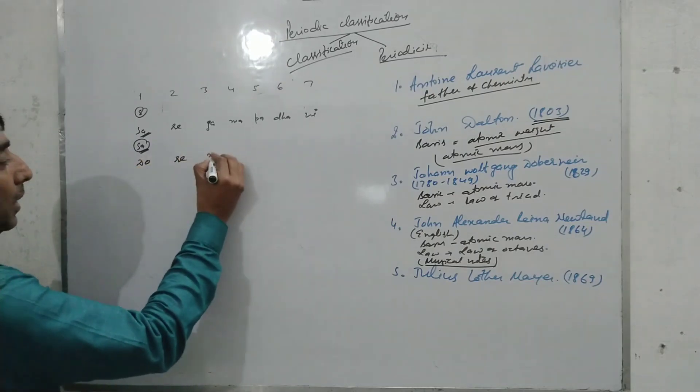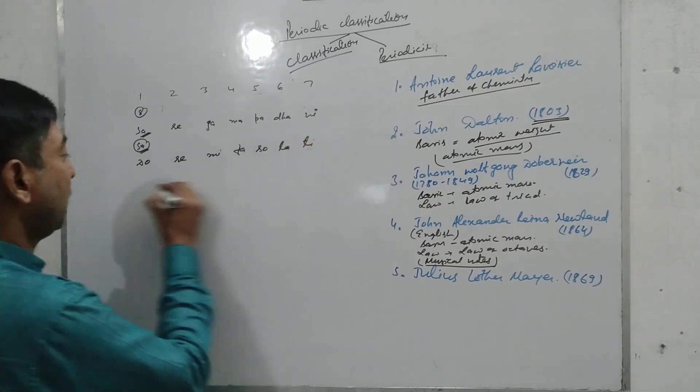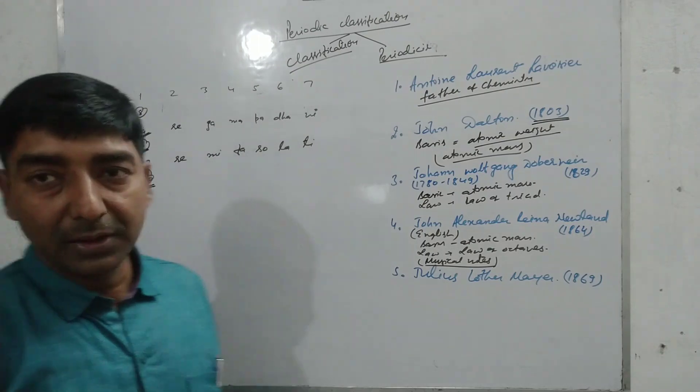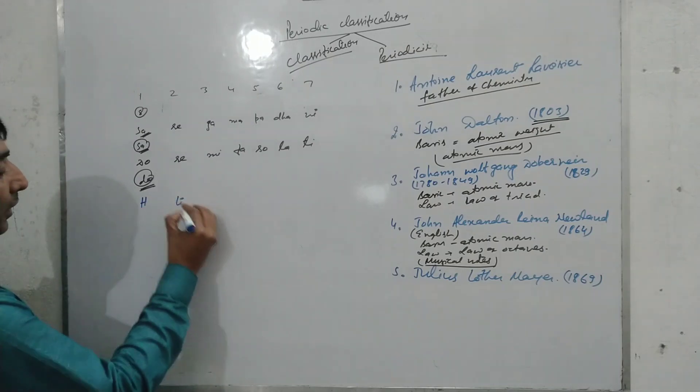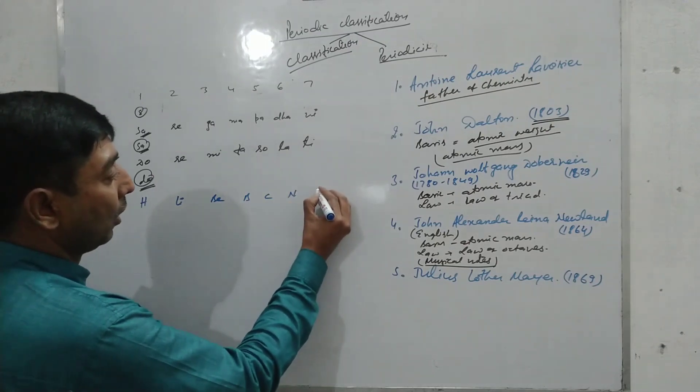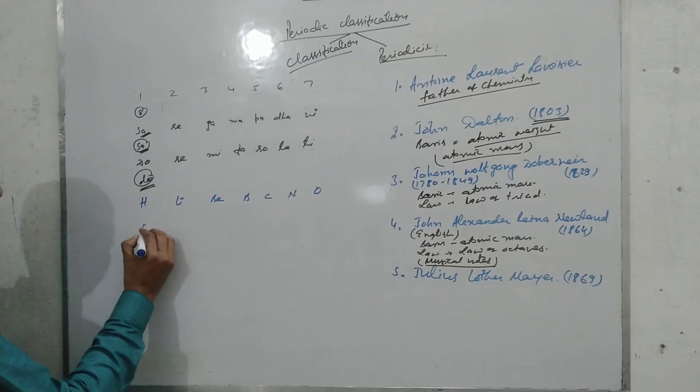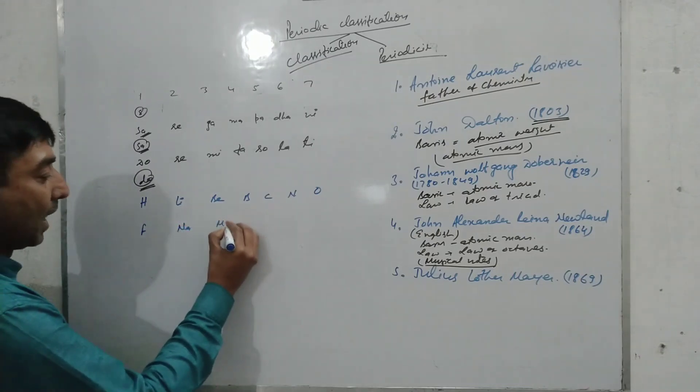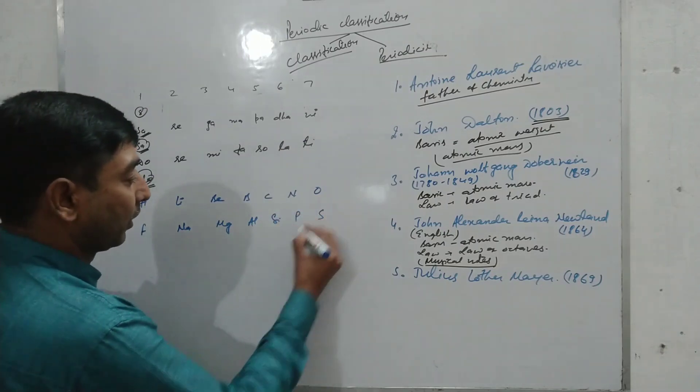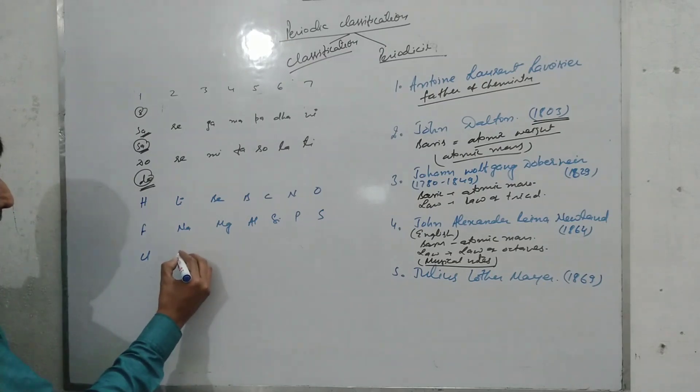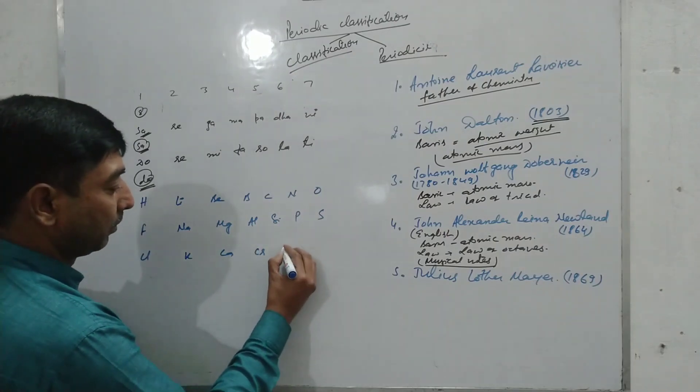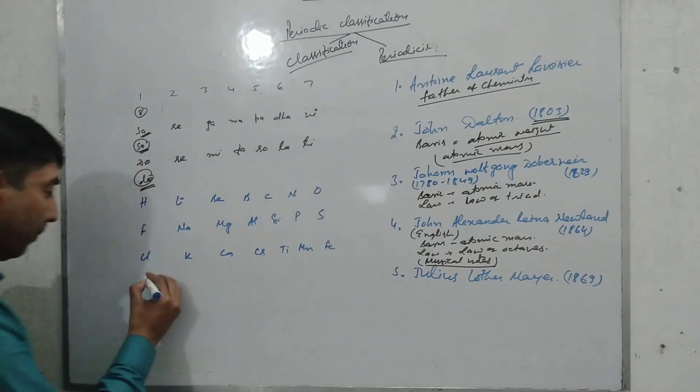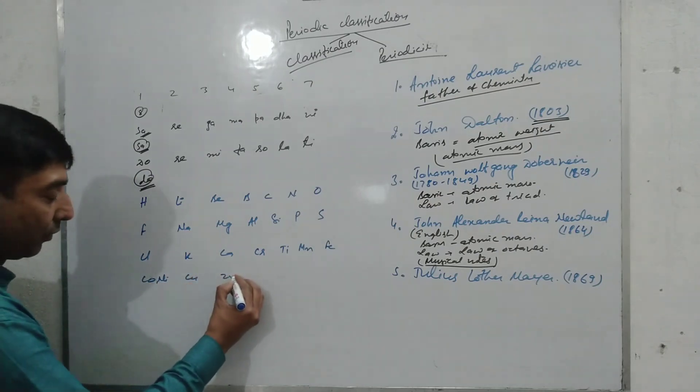When he classified the elements like hydrogen, lithium, beryllium, boron, carbon, nitrogen, oxygen, fluorine, sodium, magnesium, aluminum, silicon, phosphorus, sulfur, chlorine, potassium, calcium, chromium, titanium, manganese, iron, cobalt, nickel, copper, zinc, and so on.